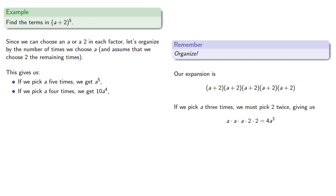If we pick a three times, we must pick 2 twice. There are 5 choose 3, ten ways to do this, so our expansion will include 10 summands of 4a³, or 40a³.